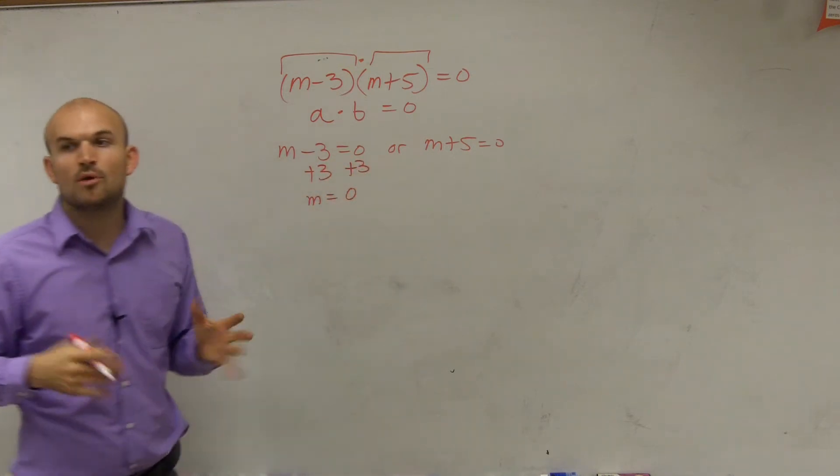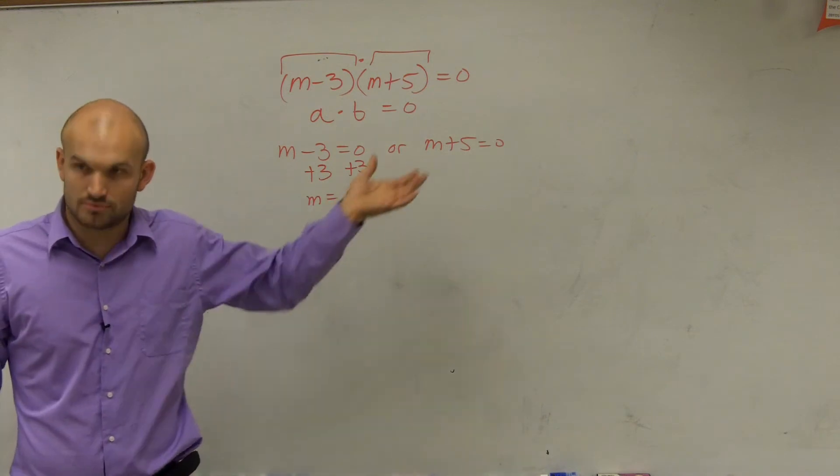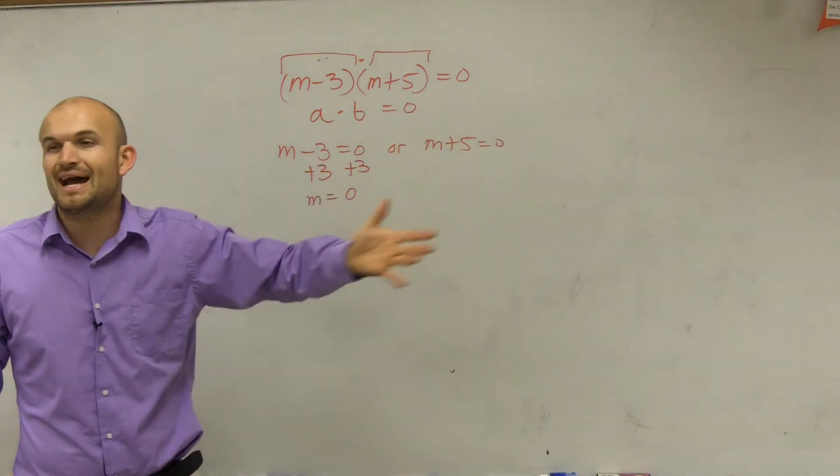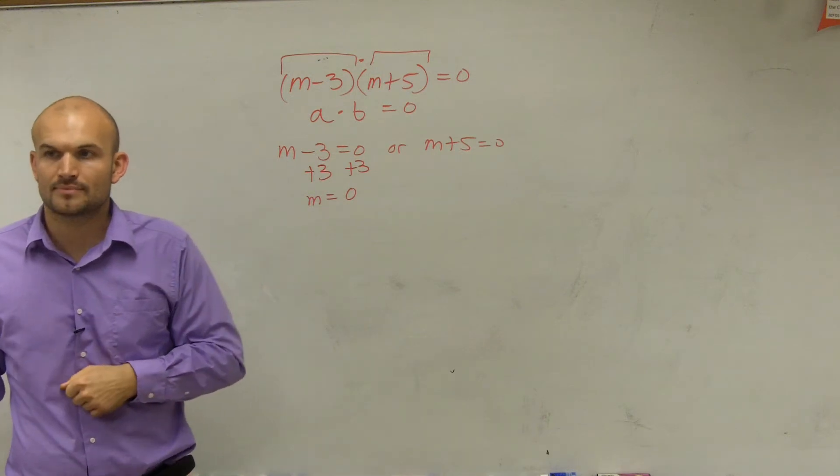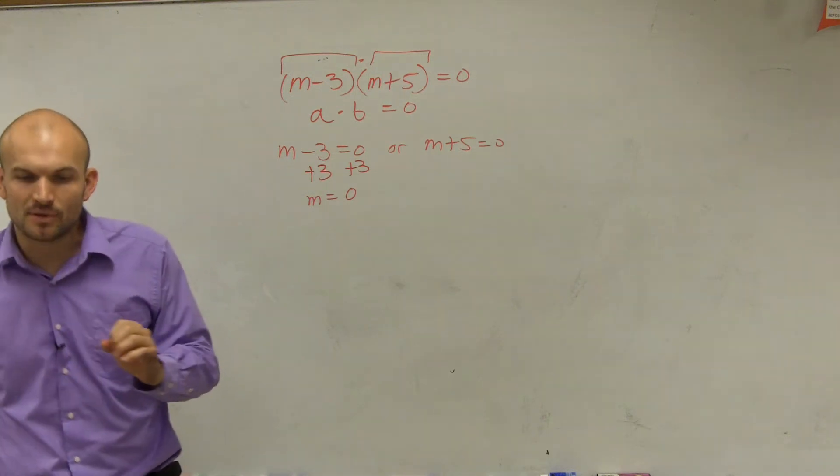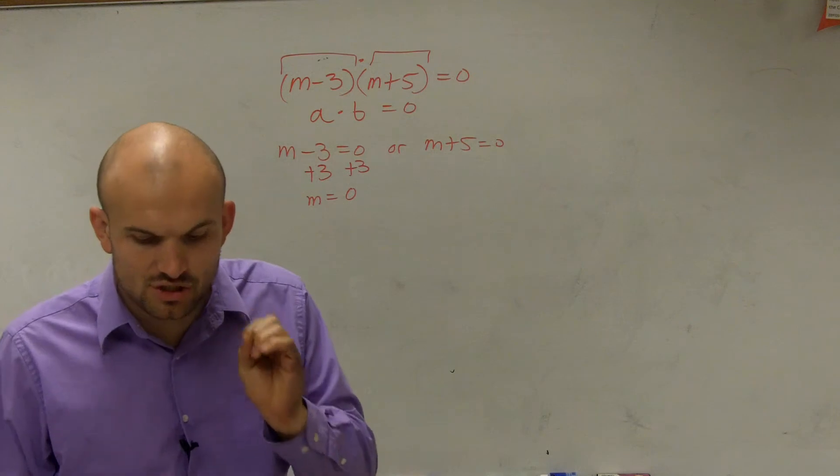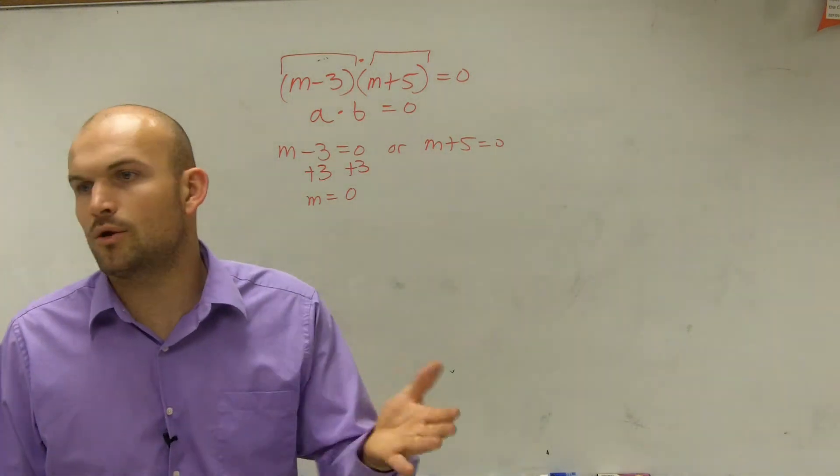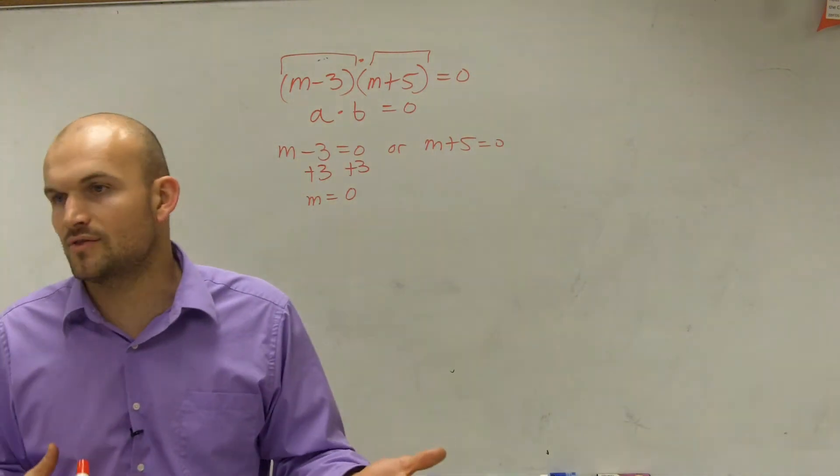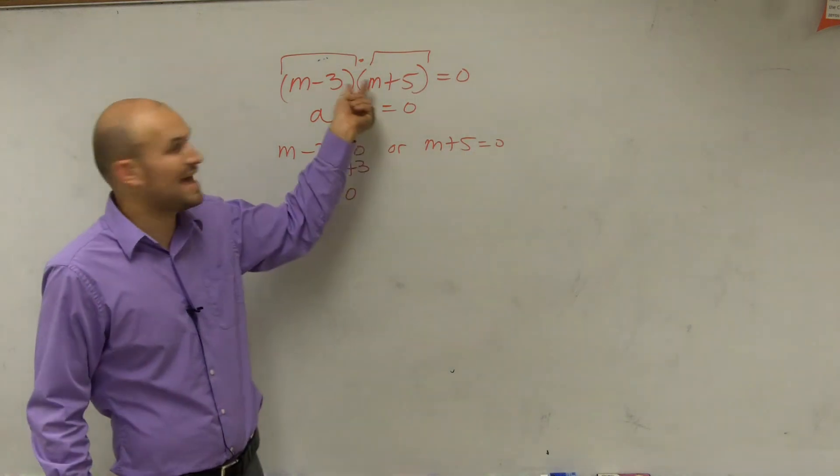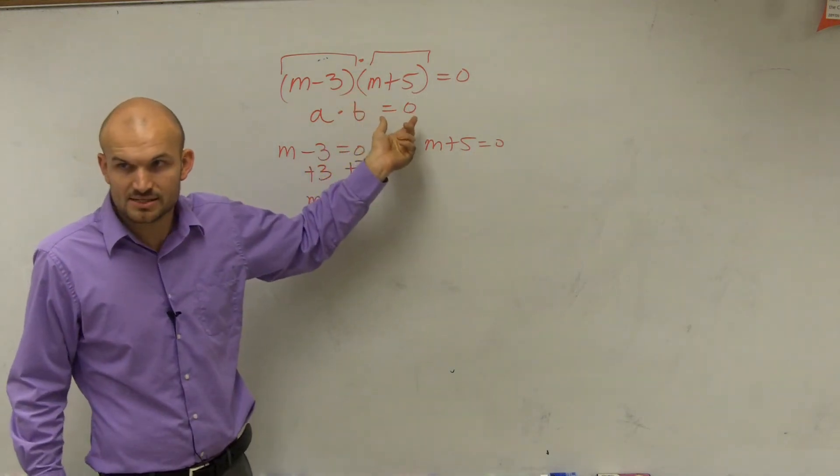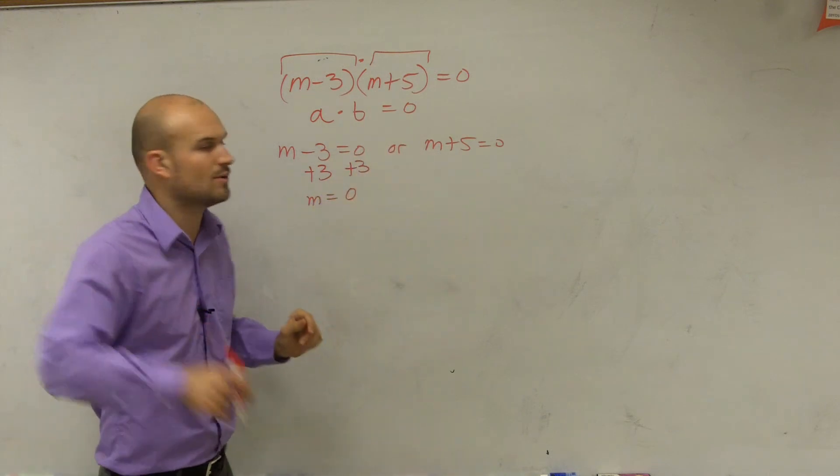If I wanted to multiply it out, yes, you could multiply those out. But they're not asking us to multiply them out, they're asking us to solve it. The problem says solve each equation. So we don't want to, if we multiply them back out, then we're going to have a trinomial, which we're not trying to figure. We're trying to find the value of m. Does that make sense? So the question is just, it's just a different question that they're asking.